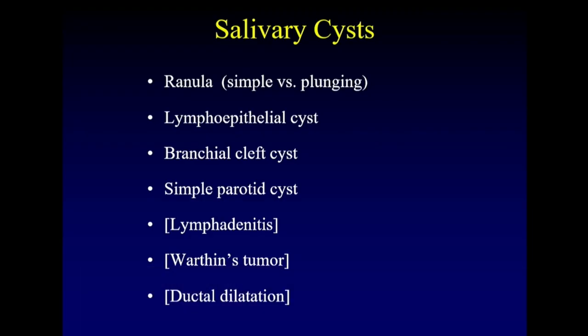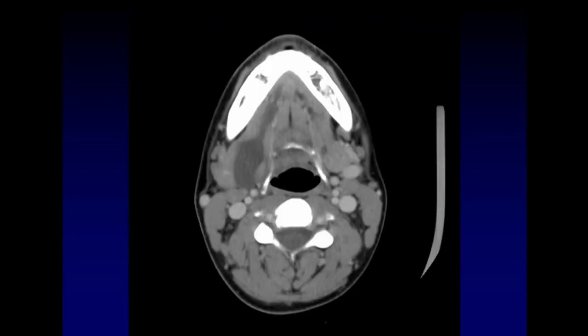Moving on, salivary cysts. We'll talk about a variety of salivary cysts like ranulas, lymphoepithelial cysts, branchial cleft cysts, and simple parotid cysts, and then some things that look a lot like cysts, like lymphadenitis, the Warthin's tumor, which we discussed, and ductal dilatation.